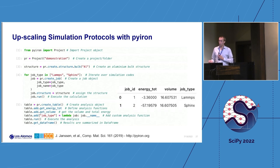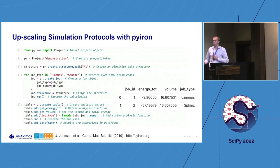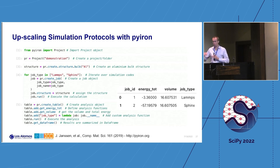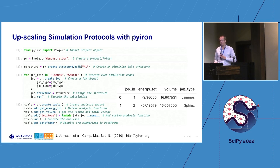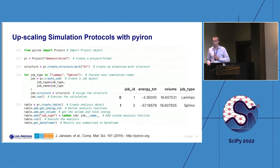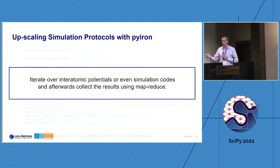We call this the parent table object, where every row is one job in your project. You can define columns by setting functions on the parent table — many are predefined, like getting total energy or volume, but you can add your own. Each function takes a job object as input and returns an entry in your column. This allows us to analyze very large datasets quite quickly and build specific datasets for machine learning applications. We iterate over codes, then use MapReduce to aggregate the data.